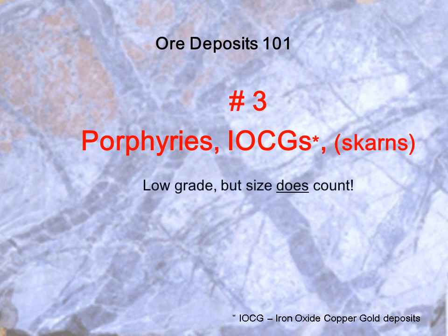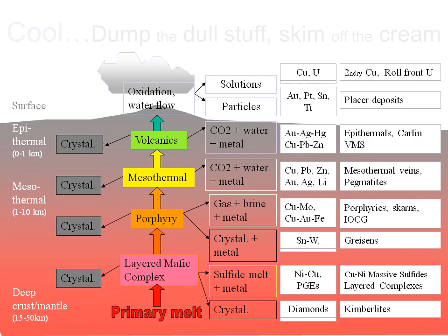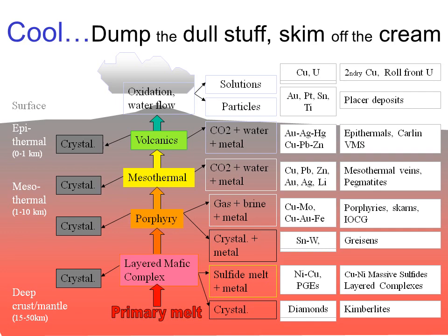These are some of the giants of the ore deposit world. In the first Ore Deposits 101 talk, I discussed how all the metals we use are mined from the top 4 kilometers of the Earth's crust. I showed why the average crustal abundance of metals wasn't good enough for economic mining, and that nature needed to concentrate metals by partially melting crustal rocks at depth, letting them rise, and then concentrating metals in the remaining magma and hydrothermal fluids.